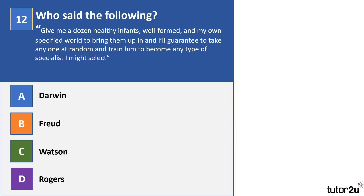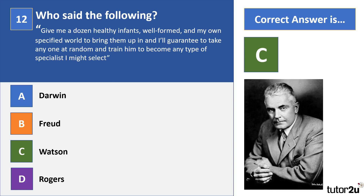Question 12: who said the following? 'Give me a dozen healthy infants, well-formed, and my own specified world to bring them up in, and I'll guarantee to take any one at random and train him to become any type of specialist I might select.' The options are Darwin, Freud, Watson, or Rogers. The correct answer is Watson. This falls in line with behaviourist principles — the idea that individuals are born a blank slate, a tabula rasa, and that Watson could shape a child into anything through manipulation of their environment.